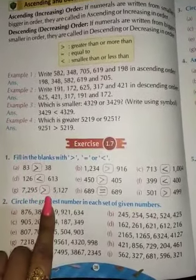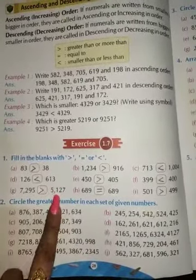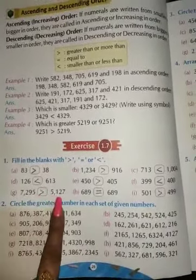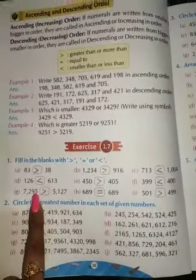G, 7,295 blanks with 5,127. This box is where students see 5,127. 7,295 is bigger than 5,127, so we will fill here greater than.